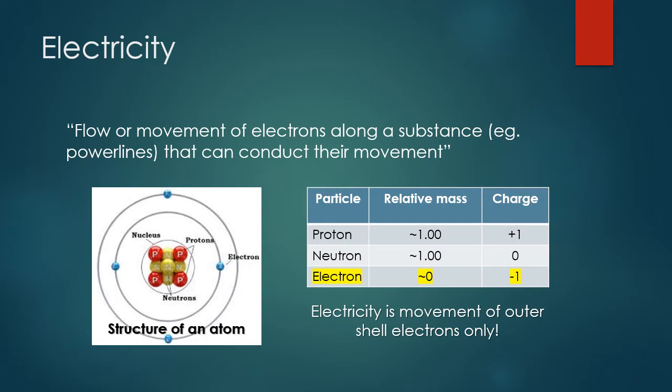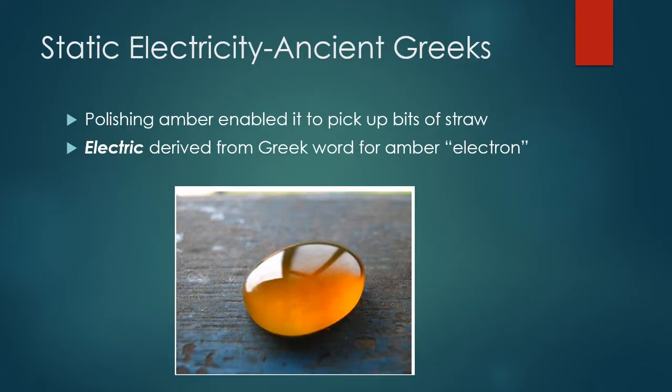Electricity is the movement of the outer shell electrons only. When we talked about an atom, we talked about the nucleus being the center with the protons and the neutrons, and the electrons on different levels surrounding that nucleus, orbiting around it. The outer shell electrons — the electrons on the very outermost shell — are the electrons that are available for electricity.